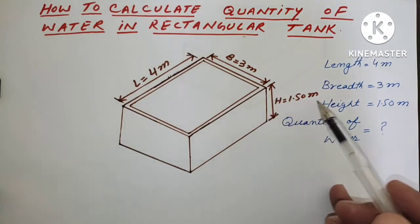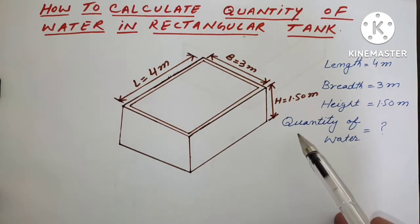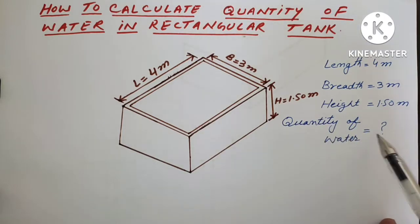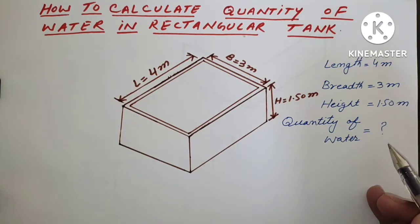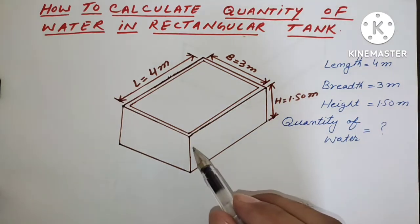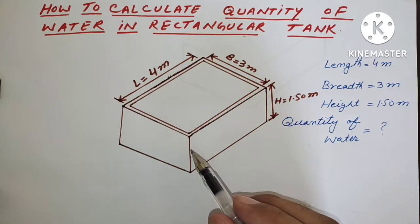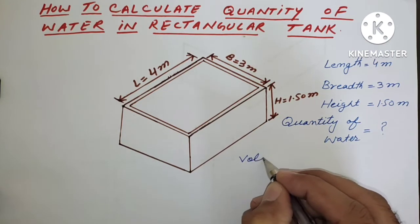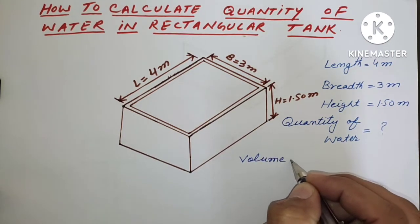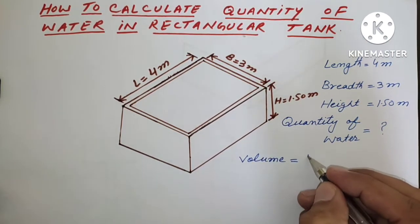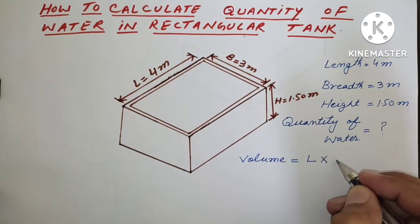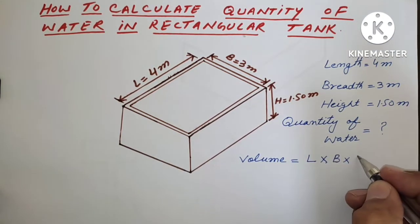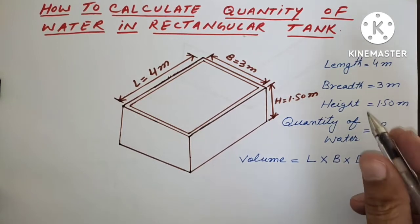Suppose we have one water tank where the length is 4 meters, breadth is 3 meters, and height is 1.5 meters. We will calculate the quantity of water. First of all, we will calculate the volume of this water tank.